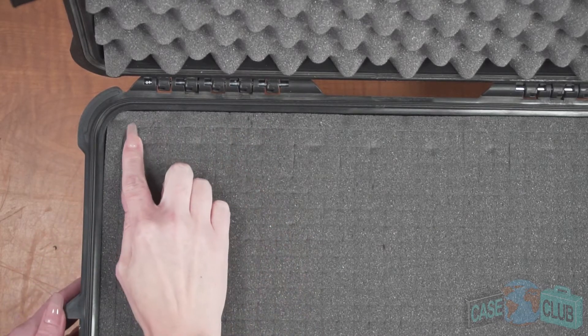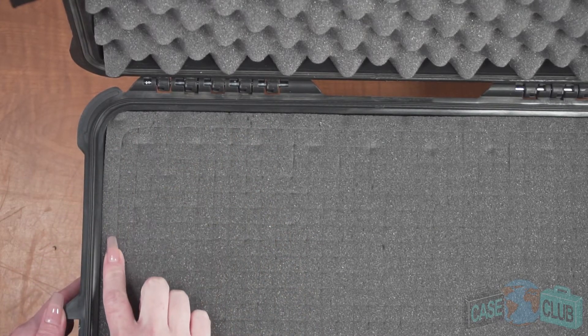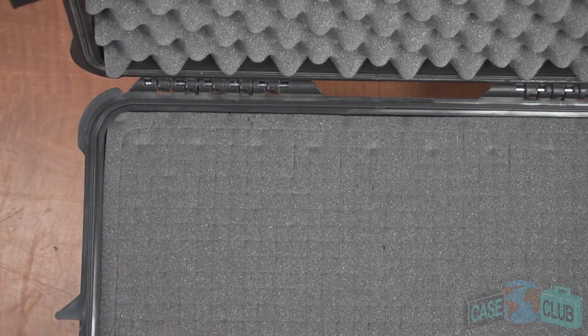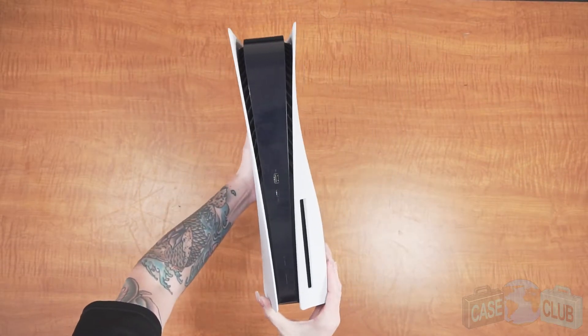As you can see, there is a border of non-scored foam that follows the perimeter of the case to help keep your items safe. The first thing you'll need to do is gather up the items you want in the case. This case is made to fit either version of the PS5,